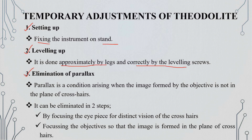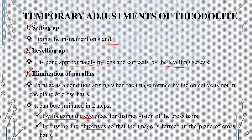The second temporary adjustment is leveling up using the level screws. The next step is the elimination of parallax. Parallax is a condition arising when the image formed by the objective is not in the plane of the crosshair. To eliminate parallax, first focus on the eyepiece, then focus on the objective, so that the image is correctly formed in the plane of the crosshair.